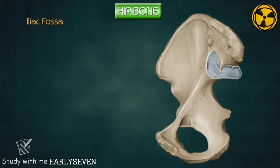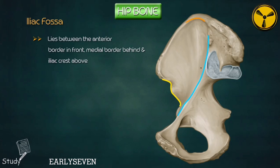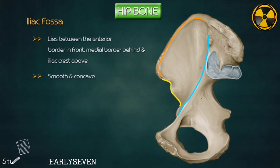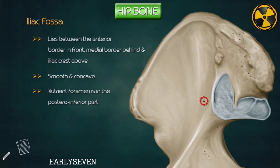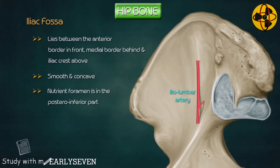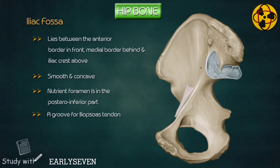Iliac fossa. It is an area which lies between the anterior border in front, medial border behind, and iliac crest above. It is smooth and concave. It presents with a nutrient foramen in its posterior inferior part which transmits the nutrient artery, derived from the iliolumbar artery. A groove is present between the anterior inferior iliac spine and iliopubic eminence which lodges the iliopsoas tendon.